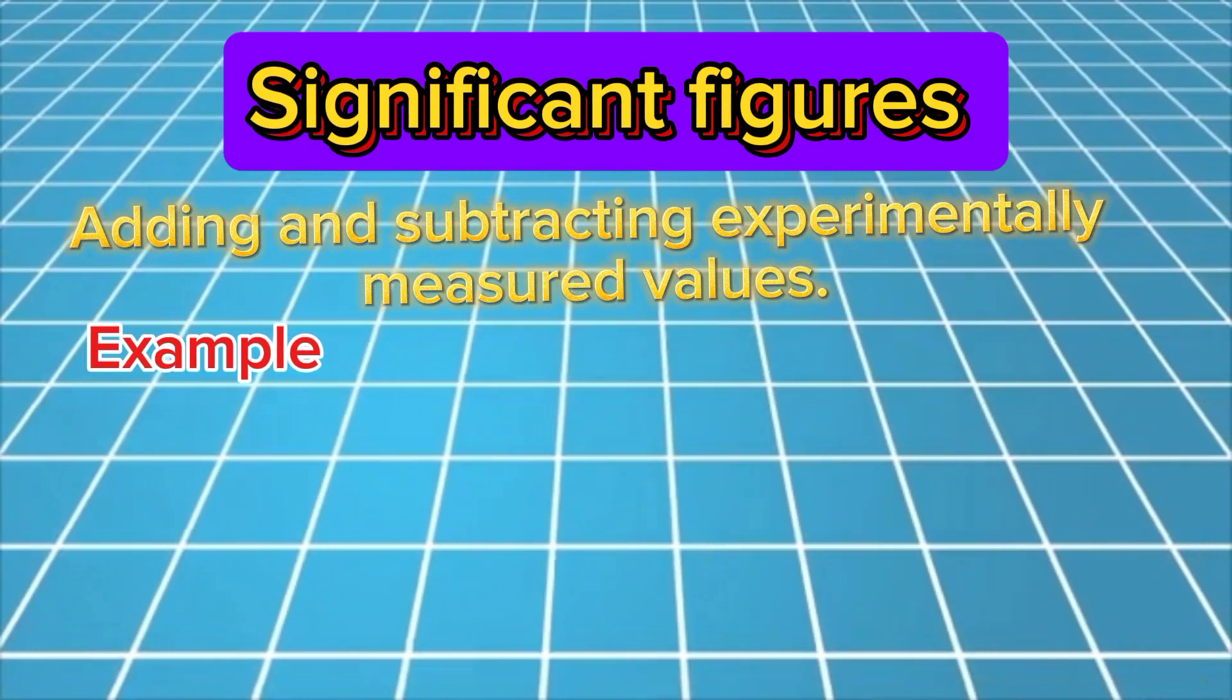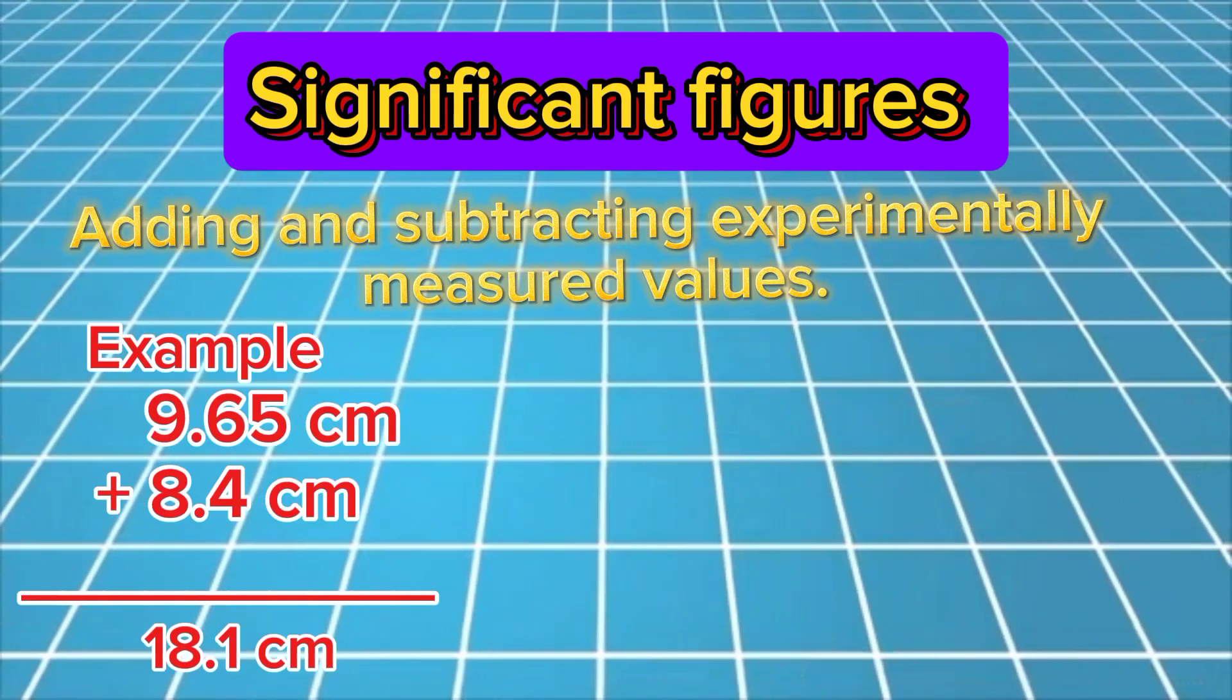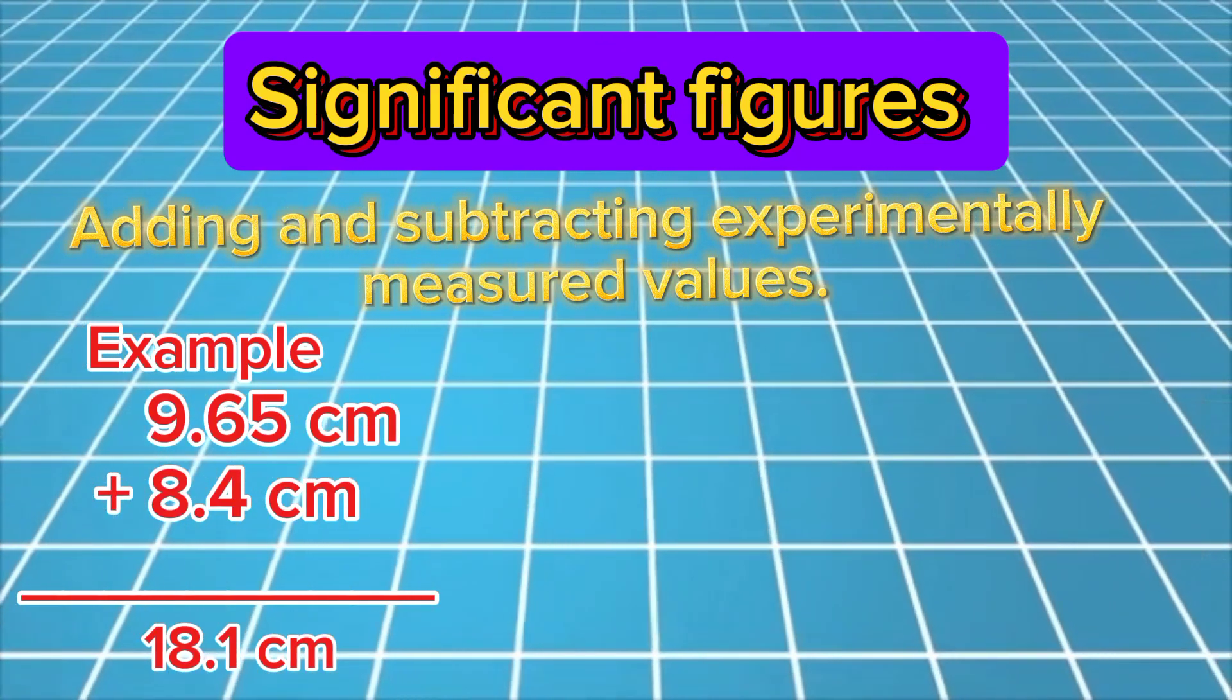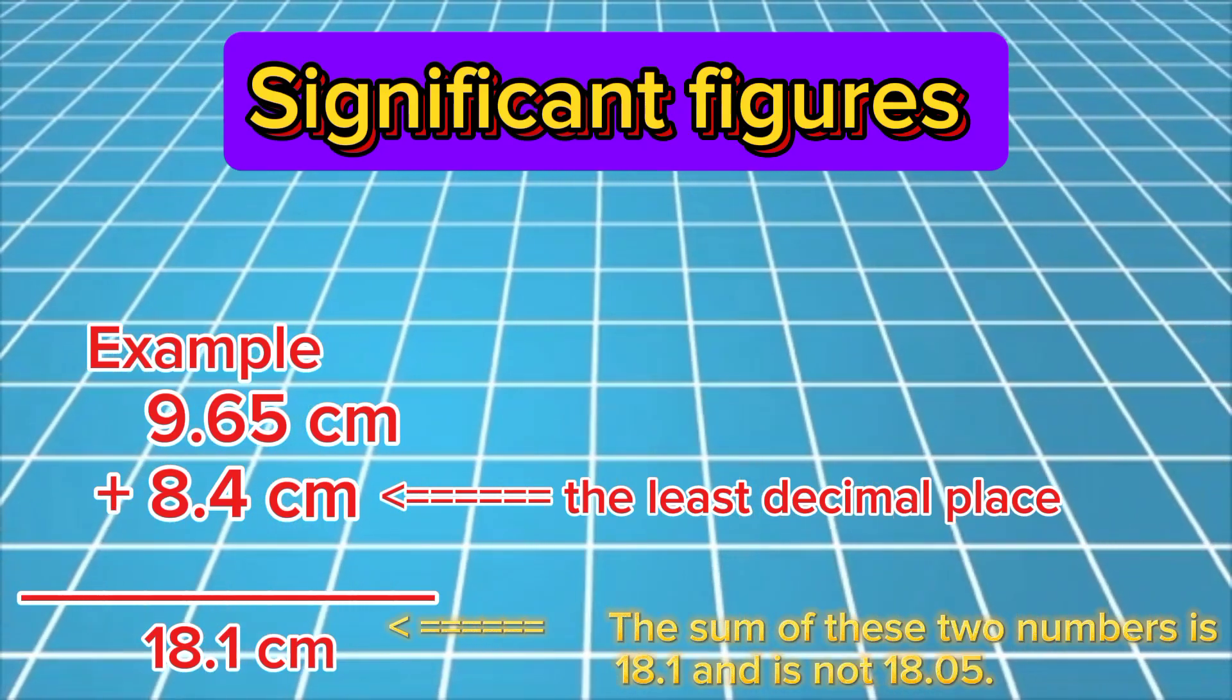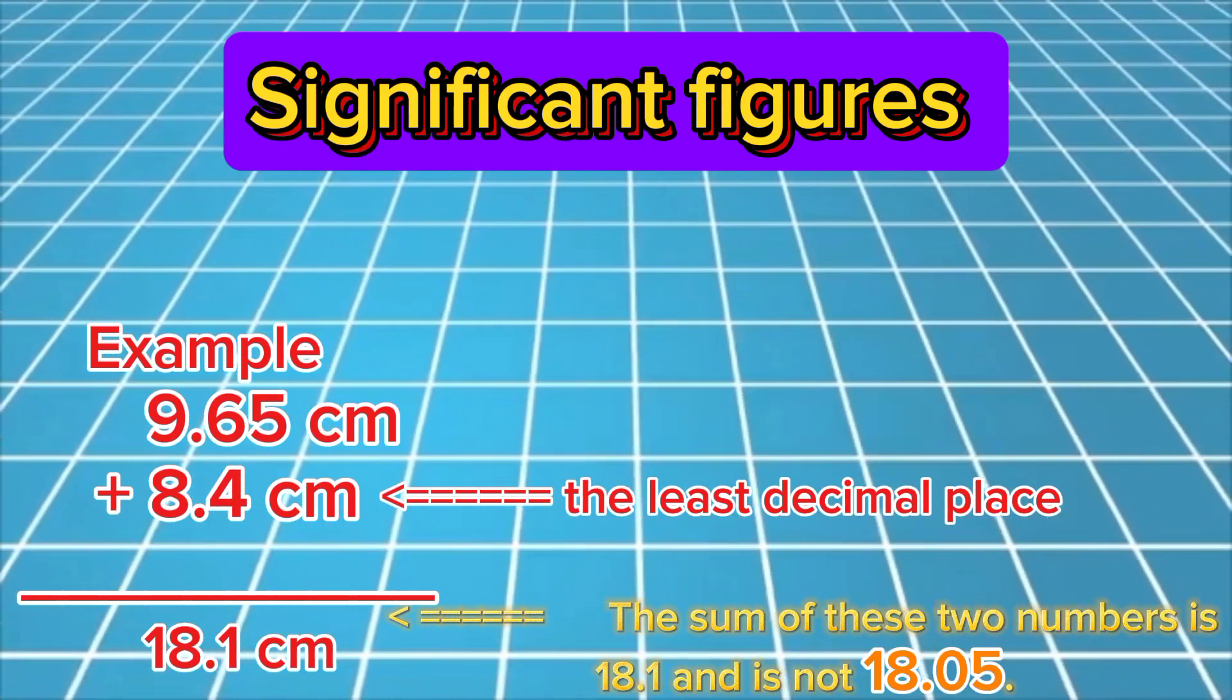For example, while adding two measured values, 9.65 and 8.4, the least precise decimal place is 8.4 centimeters. The sum of these two numbers is 18.1 and is not 18.05.